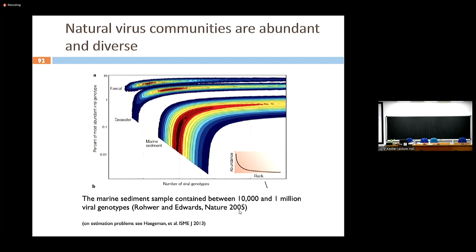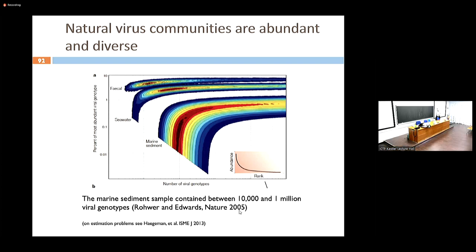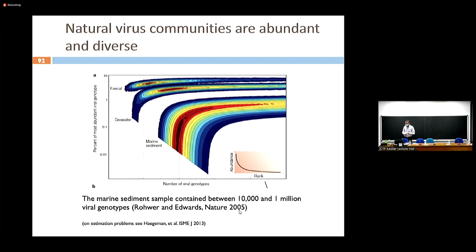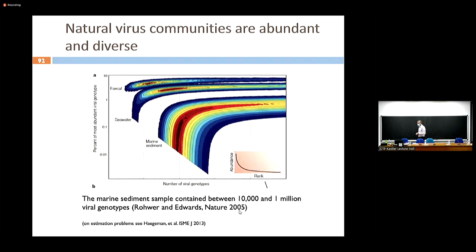In a rank abundance curve you rank types by abundance — number one is the most abundant, number two second most abundant — and plot relative abundance. There's a very long tail of relatively rare types, so we have a lot of diversity. This paper from over 15 years ago estimated between 10,000 and 1 million viral genotypes, which tells you there's a lot of diversity. Estimating the tail is very difficult because you don't see it — you take a sample, see the abundant things, and try to infer the tail shape from the bulk of the distribution.